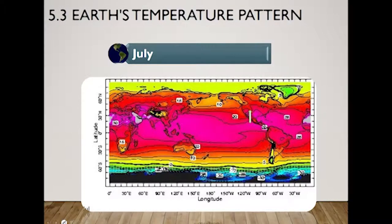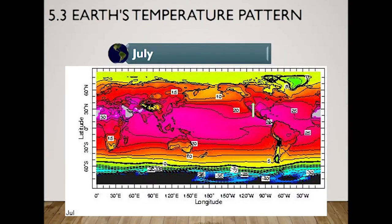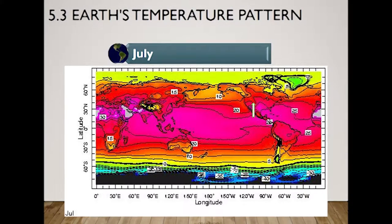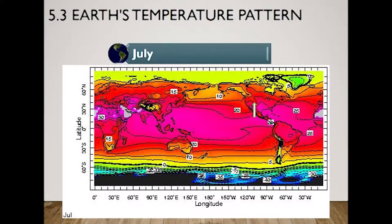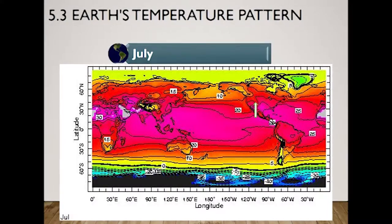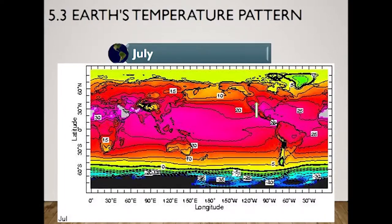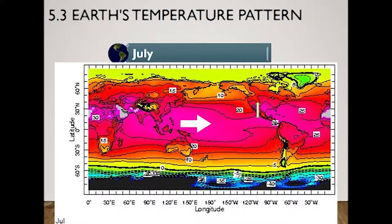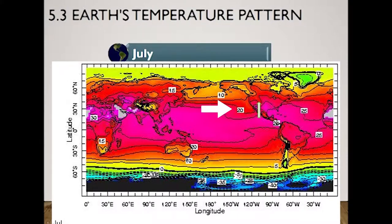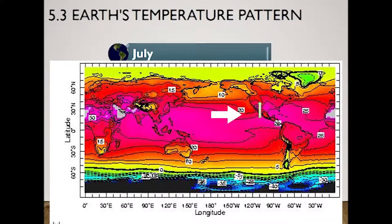Let's look at July. In July, the 10-degree isotherm swings to the north as we move from cold water to the warmer land. The differential heating of land and water results in small variation in position of the isotherm over water, but much larger variation over land. Low-latitude locations experience less variation in sun angle and day length than mid and high latitude locations, and places near large bodies of water have more moderate temperatures than those inland.